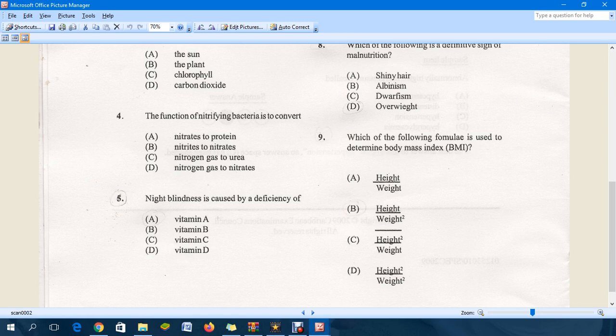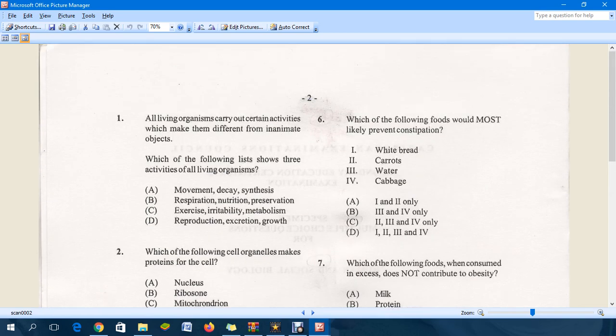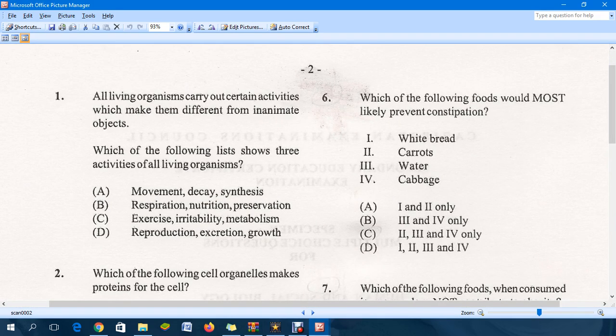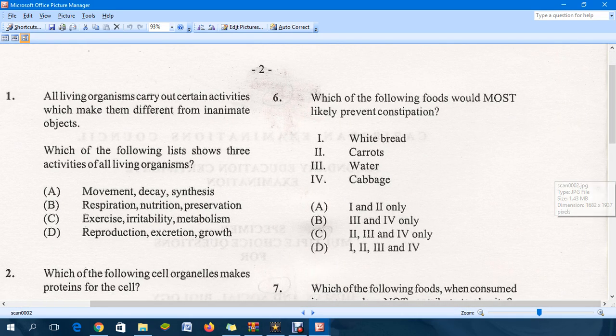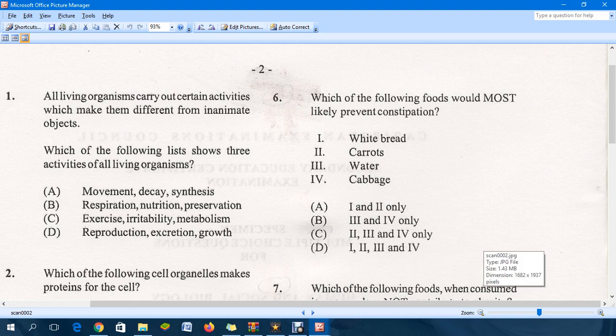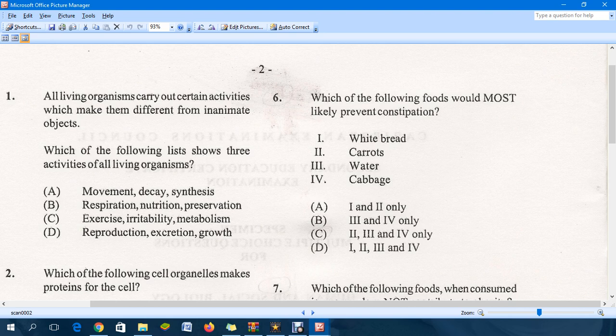Question six: Which of the following foods would most likely prevent constipation? First we have to know what constipation means - that is the inability to pass feces. The answer for this question is C.